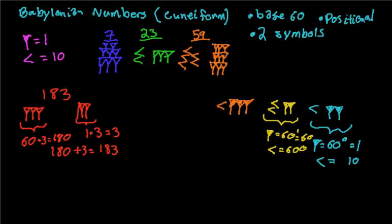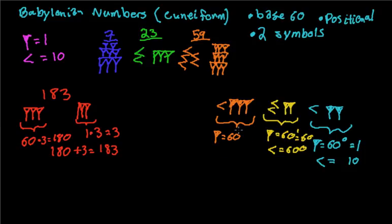And then for our last group, if you can see the pattern here, the ones symbol equals 60 to the second power — 60 squared. And 60 squared is 3,600. So the ones symbol in that group is worth 3,600, and the tens symbol is 3,600 times 10, which is 36,000.